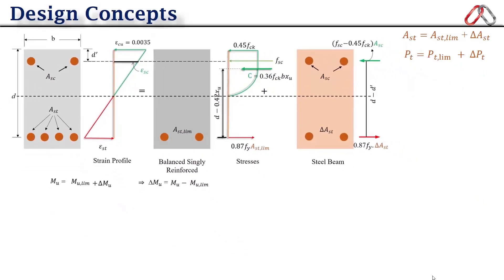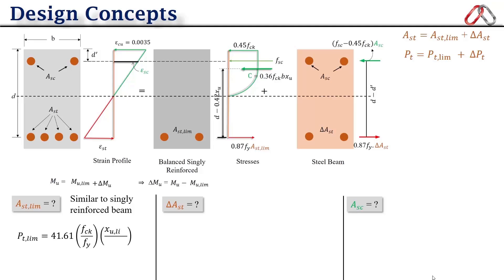Now the question arises, how to find out the area of steel in doubly reinforced beam? I mean we have to calculate A_st limiting, delta A_st, and A_sc. A_st limiting will be similar to singly reinforced beam. Here I would recommend you use the percentage formula for tension steel: p_t limiting is equal to 41.61 times f_ck upon f_y into x_u limiting upon d. And we can calculate it very easily because x_u limiting upon d value will be given in IS456 according to grade of steel. Then f_ck and f_y are already given in the question, so it will be very easy and a very short formula.